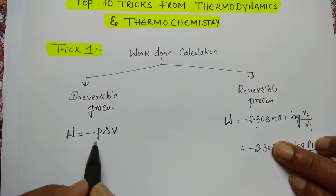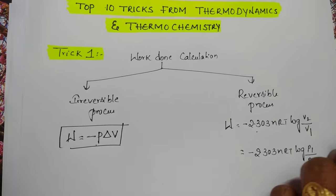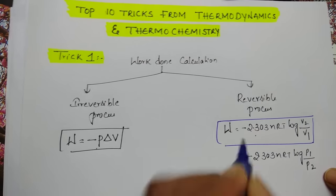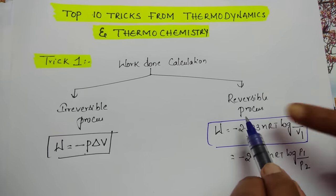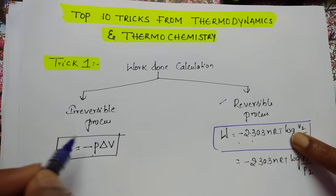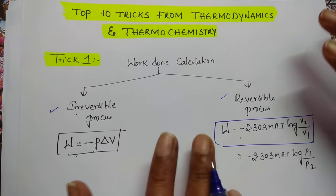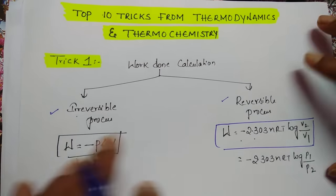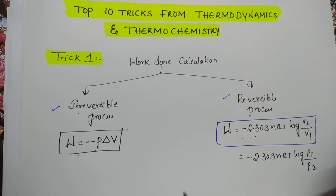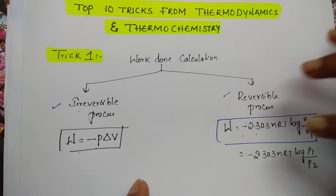Coming to these two formulas — which one do you use? If the word 'irreversible' is given in the question, use W = -PΔV. If neither reversible nor irreversible is specified, which formula should you use?